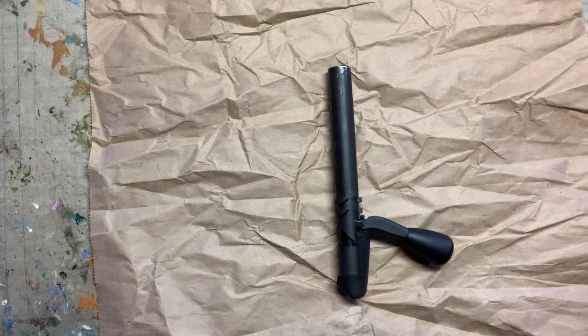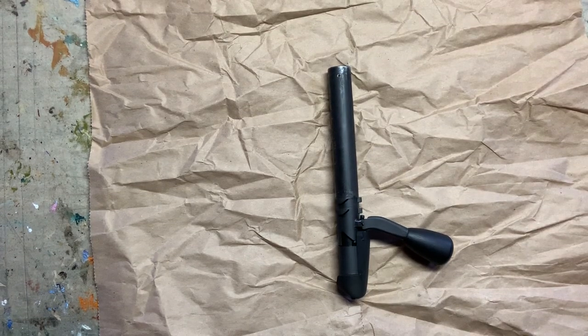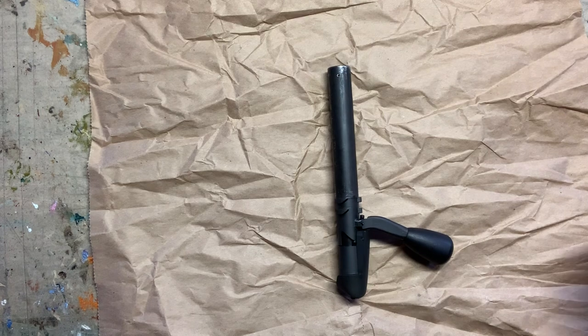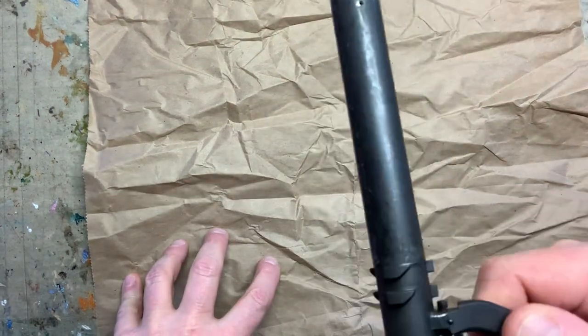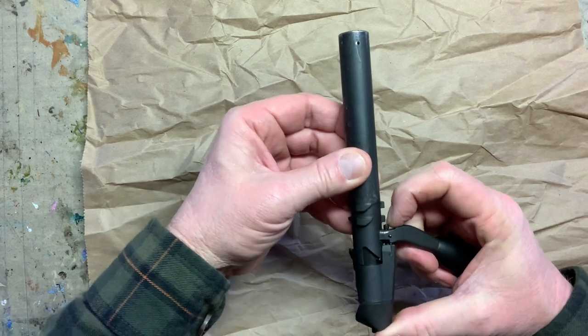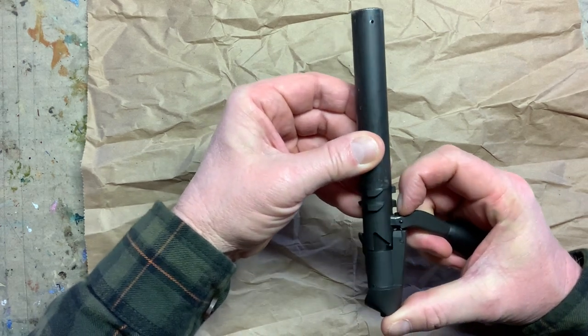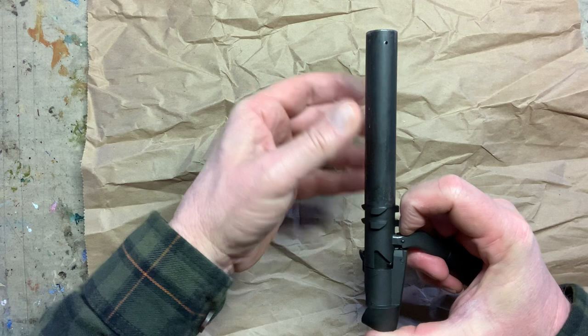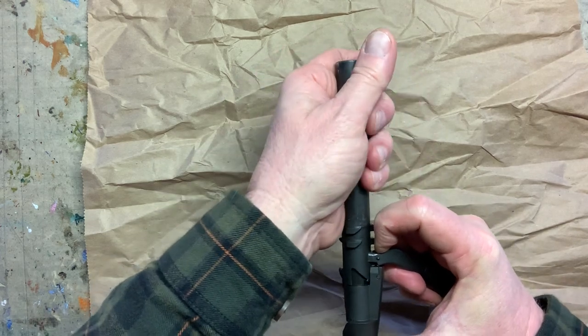All right, here's a video on how to disassemble and assemble a Steyr SSG69 bolt. This is the way the bolt comes out of the rifle. There's a little detent at the top of the bolt handle. You just push that detent and grab the front of the bolt and turn it counterclockwise.